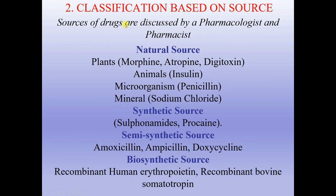Classification based on source: sources of drugs are discussed by pharmacologists and pharmacists. Natural sources include plants, animals, microorganisms, and minerals. Synthetic sources include, for example, sulfonamides and procaine. Semi-synthetic sources include amoxicillin, ampicillin, and doxycycline. Biosynthetic sources include recombinant human erythropoietin and recombinant bovine somatotropin.